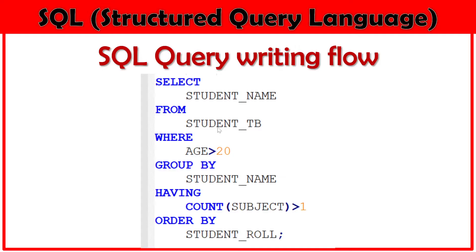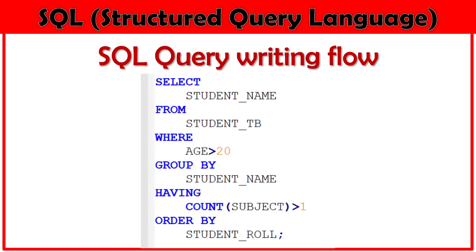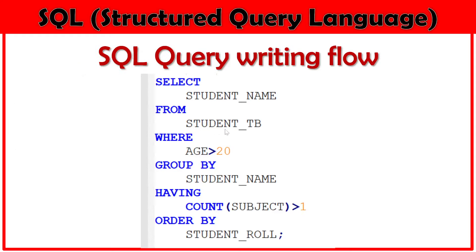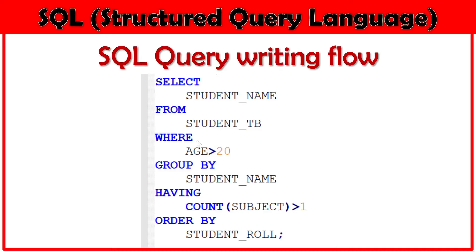This is also how the SQL engine executes our queries and sources the data. Whenever we write a SQL query, the first part of execution is FROM. The SQL engine first executes the FROM part to get data from the table. Then it applies the WHERE clause validation — for example, showing data where age is greater than 20.